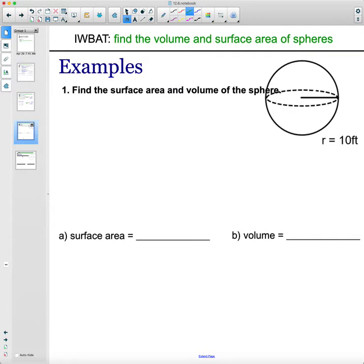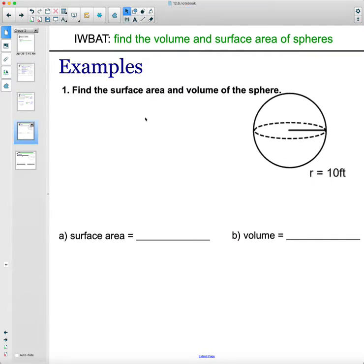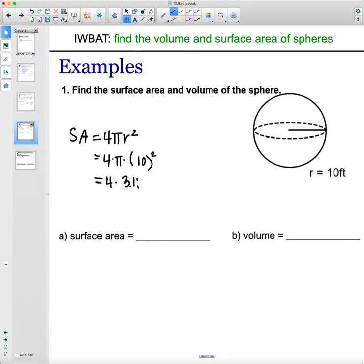So let's find the surface area and the volume of this sphere. Surface area formula is 4π times the radius squared. So we'll do 4π(10)². Remember, squared means the 10 is there twice. So when you're typing it into your calculator, type in 4 × 3.14 × 10 × 10. So 4 × 3.14 × 10 × 10 gives us 1,256. And then it's surface area, so 1,256 feet squared.